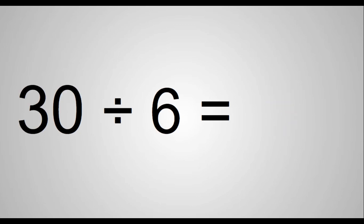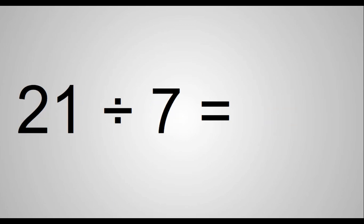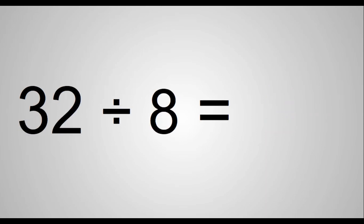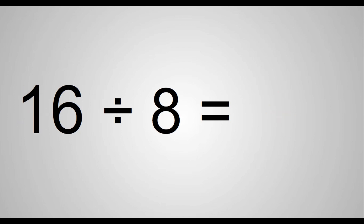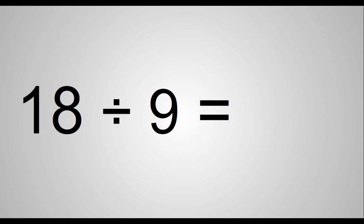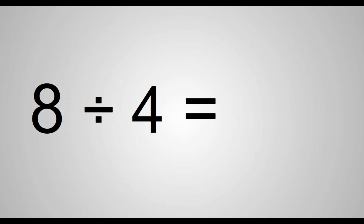30 divided by 6 equals 5. 21 divided by 7 equals 3. 32 divided by 8 equals 4. 36 divided by 9 equals 4. 16 divided by 8 equals 2. 18 divided by 9 equals 2. 8 divided by 4 equals 2.